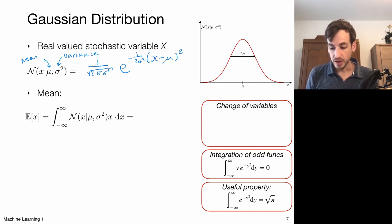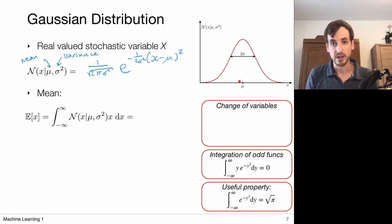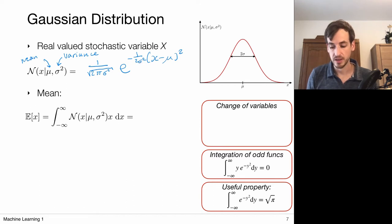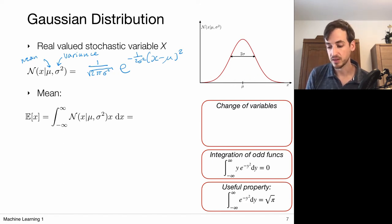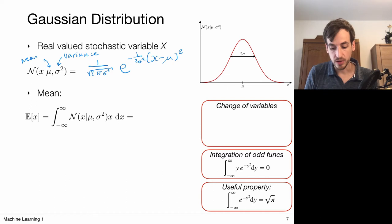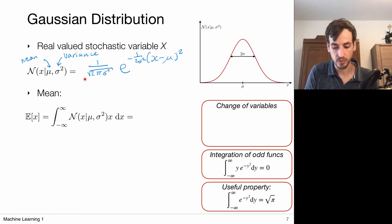Sigma squared, or sigma, determines the width of this distribution. If sigma is very small, we only assign high probabilities to points that are close to mu, and as soon as we leave the vicinity of mu this decays to 0. If sigma becomes very large, we get a very wide distribution and start more equally assigning probabilities to all values on the x-axis, though they still decay to 0 moving away from mu. Distributions are normalized to integrate to 1, so integrating this over x gives 1 — that's why we have the correction term up front.